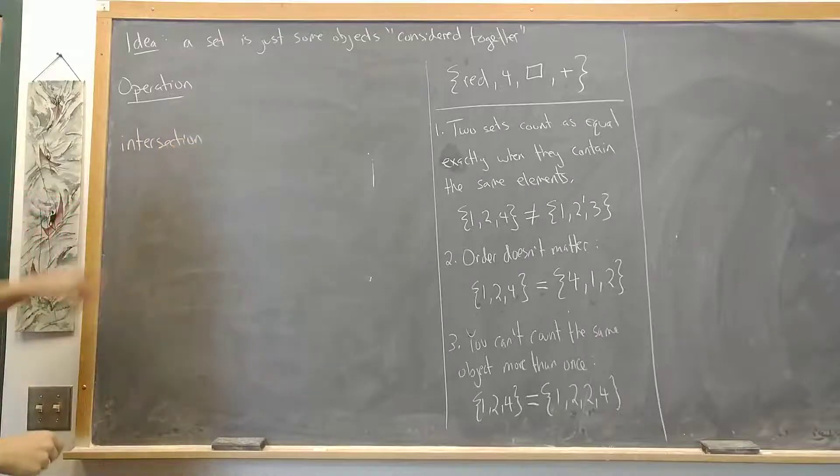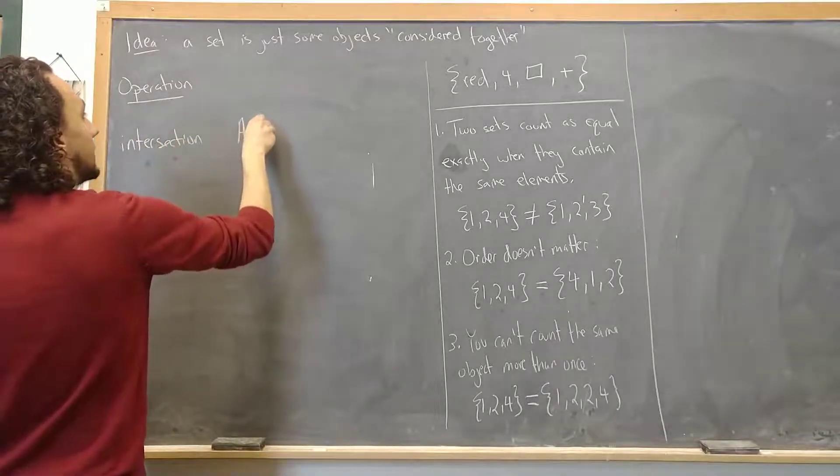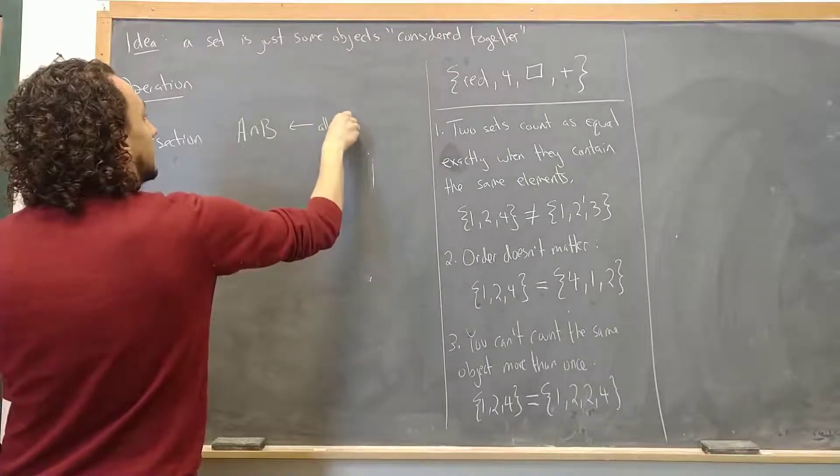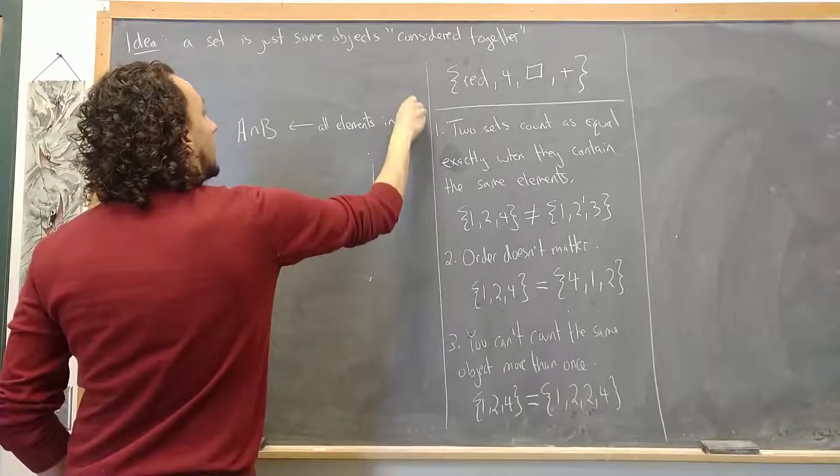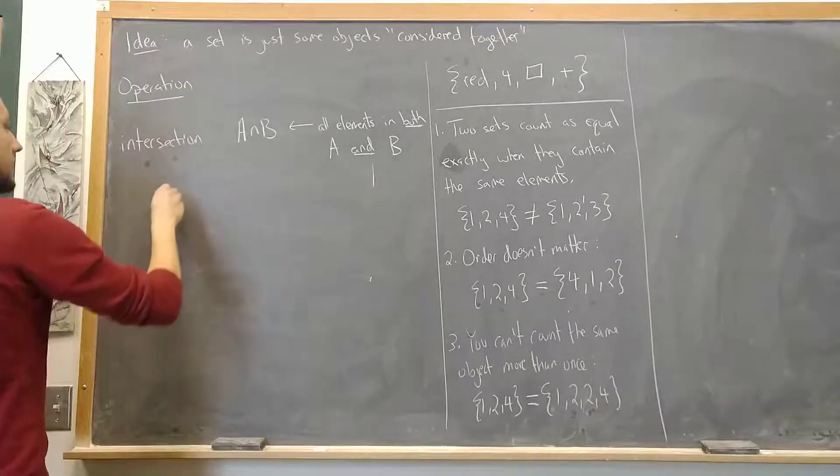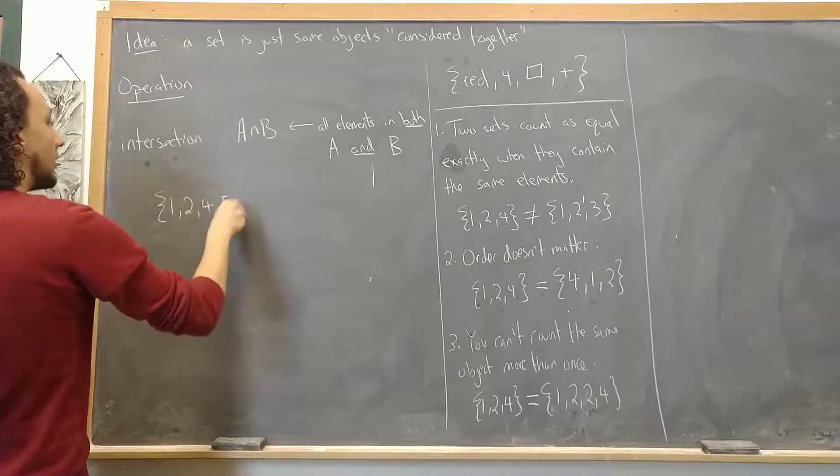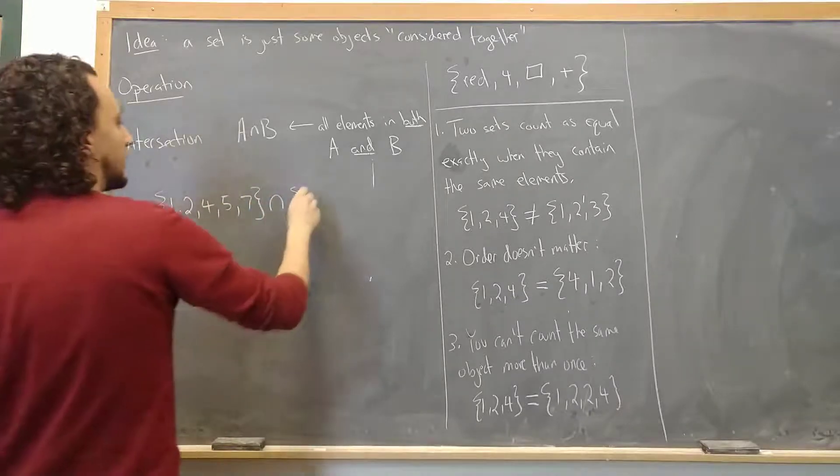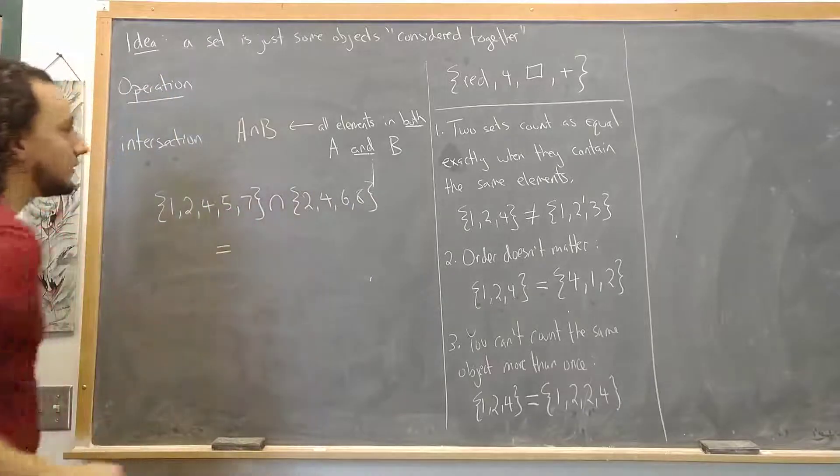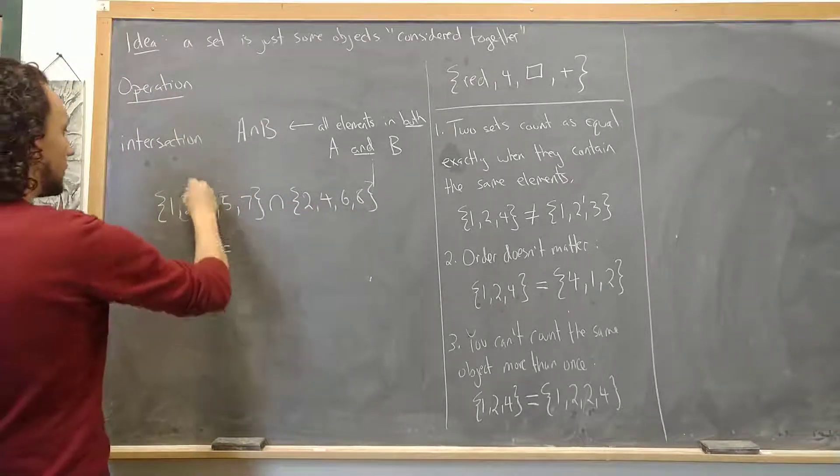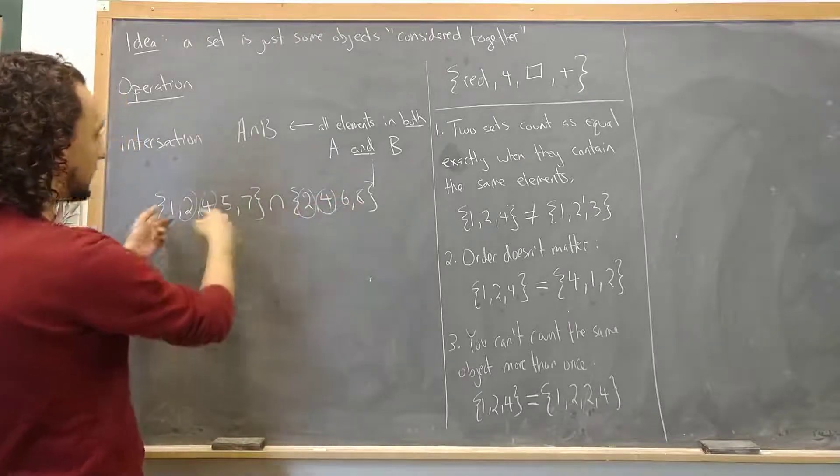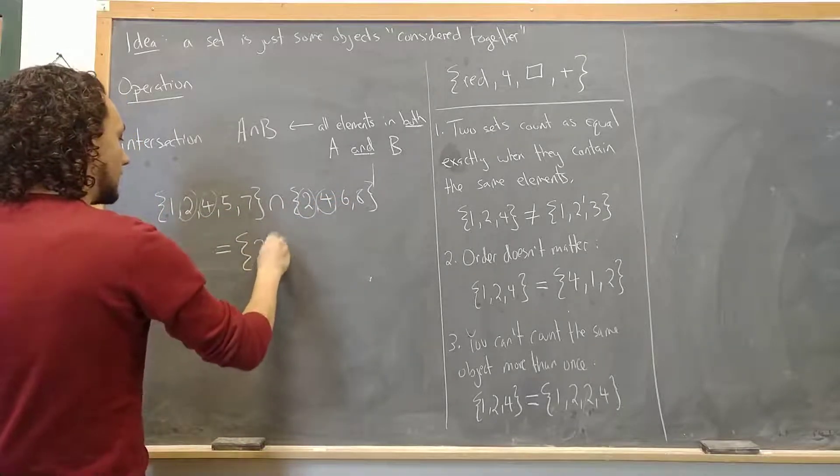So one key operation is called intersection and that's written like A intersect B. And the idea is that this is all elements in both A and B. So an example would be if I write down the set that contains 1, 2, 4, 5, 7 and I intersect that with the set that contains 2, 4, 6, 8. And what this gives me is all the elements that are in both of these. So 2, 4, and that's it because 1, 5, and 7 are on this side but not on this side and 6 and 8 are on this side but not on this side. So their intersection is just 2 and 4.